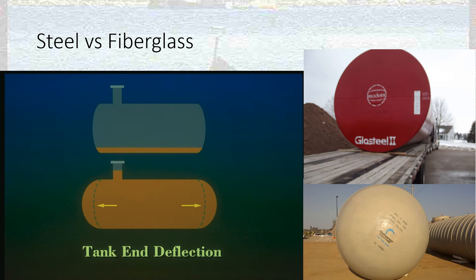When looking at a steel tank versus a fiberglass tank — the two major materials most gas station tanks are built from — you can identify them by their ends. If a tank has flat ends, it's a steel tank; you can see the flat end on this tank here. If it has a rounded or convex end, that tells you it's a fiberglass tank. This is a quick and easy way to identify tank material whether you're looking at drawings or in real life.